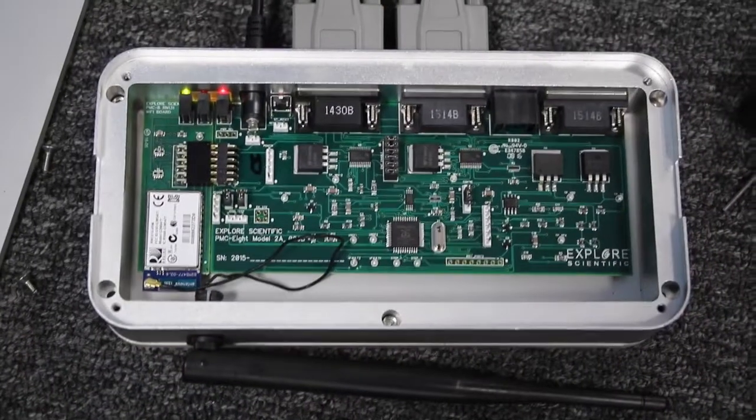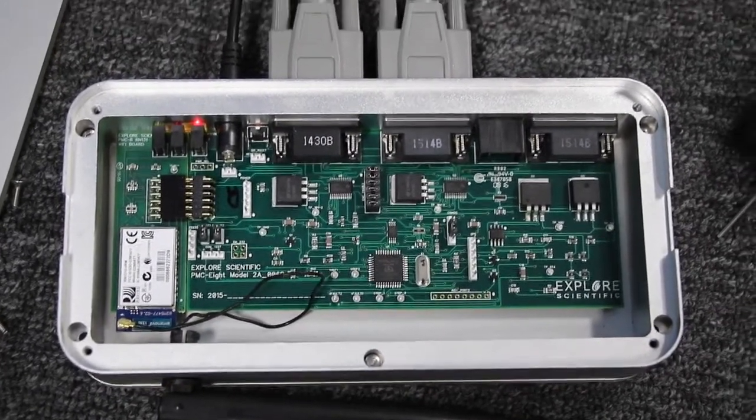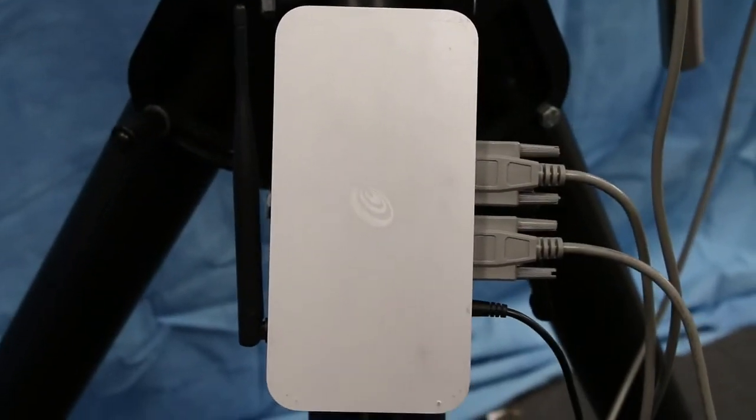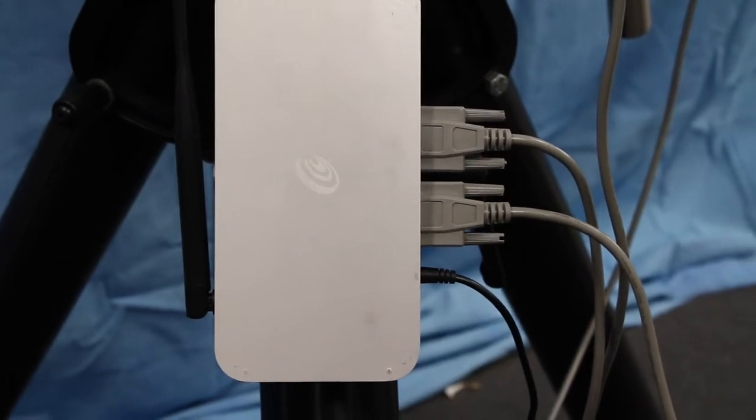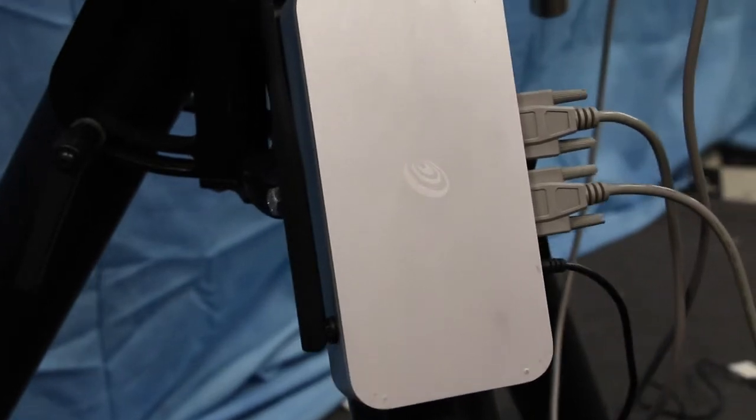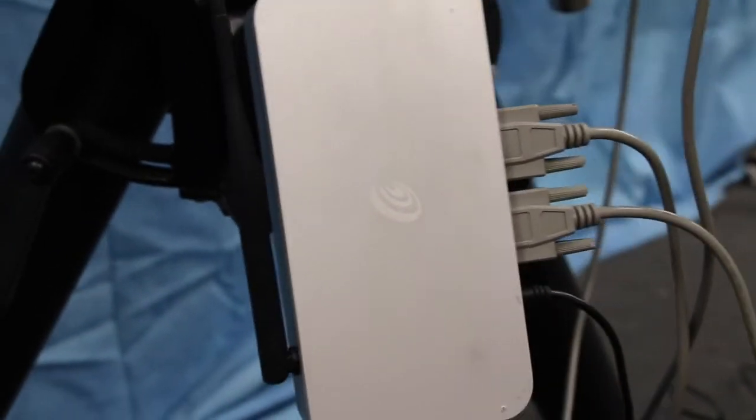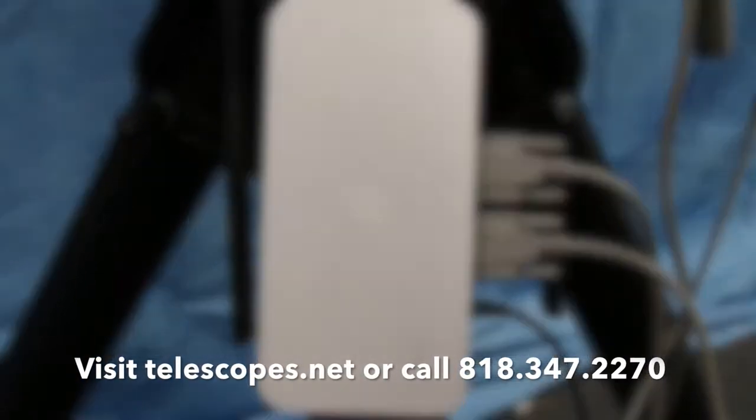This is the PMC-8 electronics box. This is included with the purchase. It is an eight processor electronic system. It connects with regular serial cables to each motor. It has Wi-Fi on board. Its firmware also has the first wireless ASCOM driver available on the marketplace today, and that is all built into this electronic box.